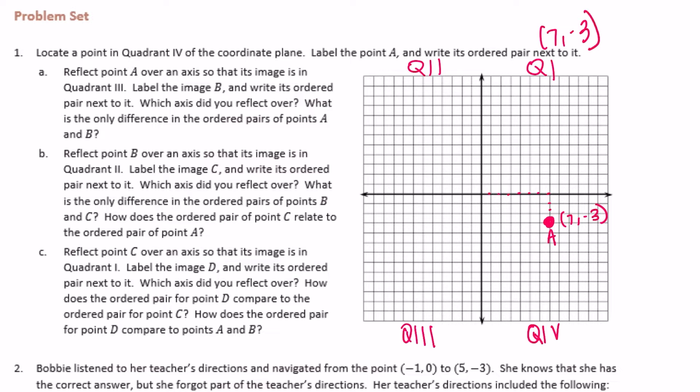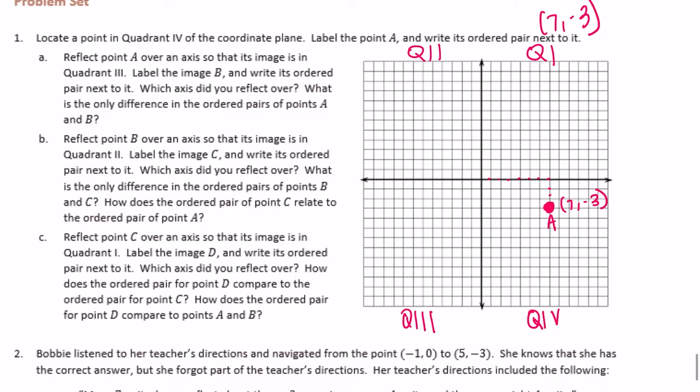You could pick any point as long as your first coordinate is positive and your second y-coordinate is negative — then you have a correct answer for that part. Part A says: reflect point A over an axis so that its image is in quadrant 3.